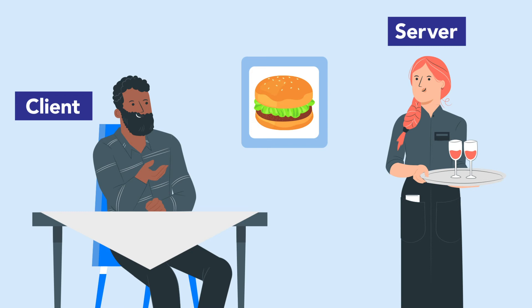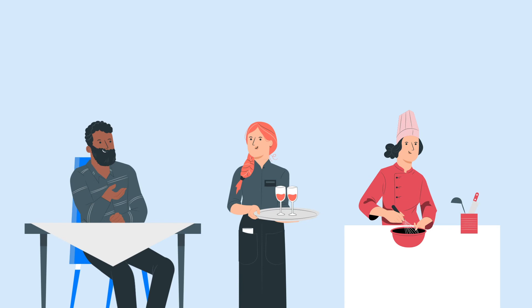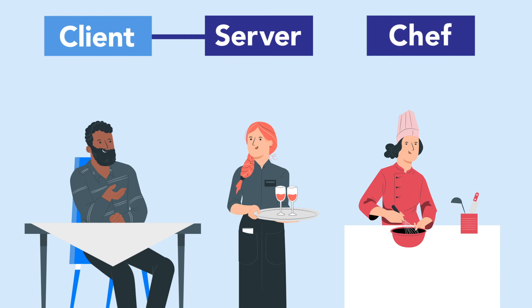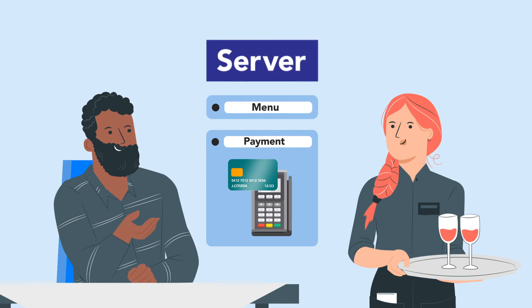Hooray! I got the response to my request. Let's freeze frame now to add some colour to this analogy. First, some terminology. I'm the client in this situation. The person in the middle — they're the server. What makes them a server? Simply that they handle and respond to requests. So the chef is another kind of server, because they handle and respond to requests from the person looking after me. And the card machine, the menu — they're servers again. They all handle and respond to requests.